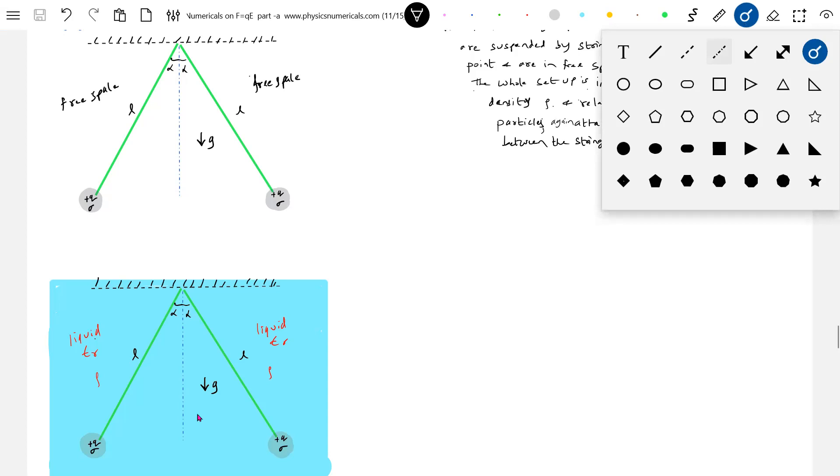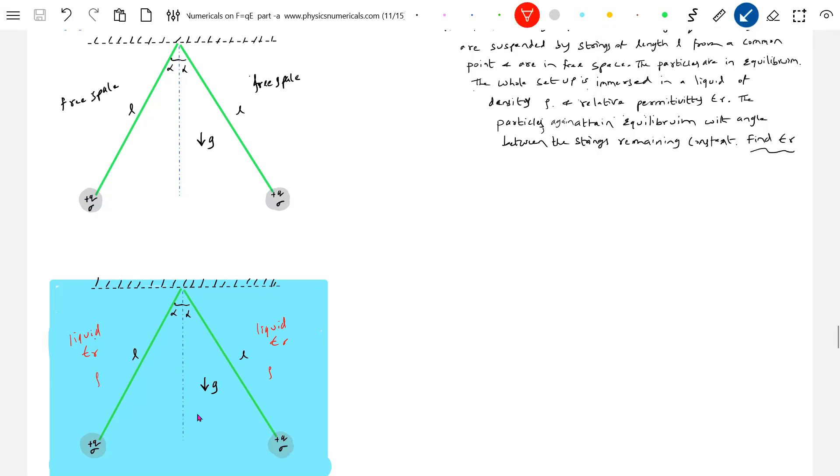Let's go for the forces that are acting. Electrostatic repulsive force, the weight, and the tension in the string. Similarly on this particle also, the forces acting are the weight, the tension, and the electrostatic force. Let me call this one the initial condition.